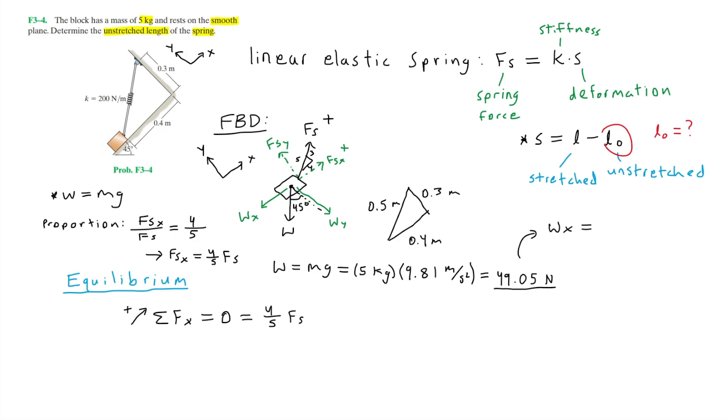To find the x component of the weight, we want to find Wx. Essentially we want to break down W into its x component. We can use trigonometry to find Wx. Since Wx is opposite to the 45 degrees, we can use sine. We know that sine theta is equal to opposite over hypotenuse. Plugging this in, sine 45 degrees equals Wx divided by W. Hence Wx equals W sine 45 degrees, which ends up as 49.05 sine 45. Notice that the arrow points in the negative x direction. So this is going to be minus 49.05 sine 45.